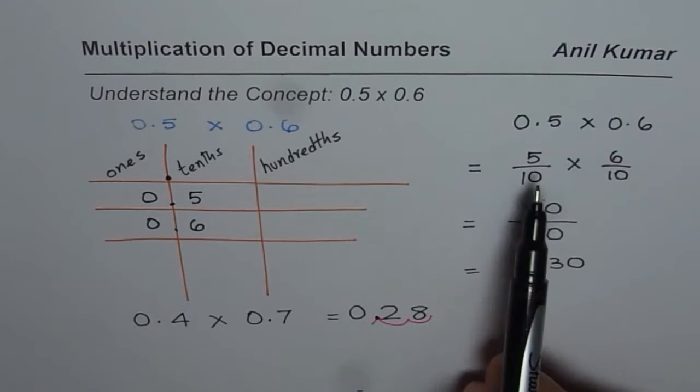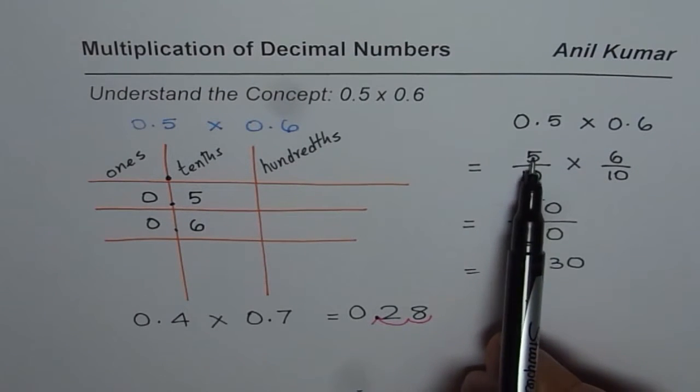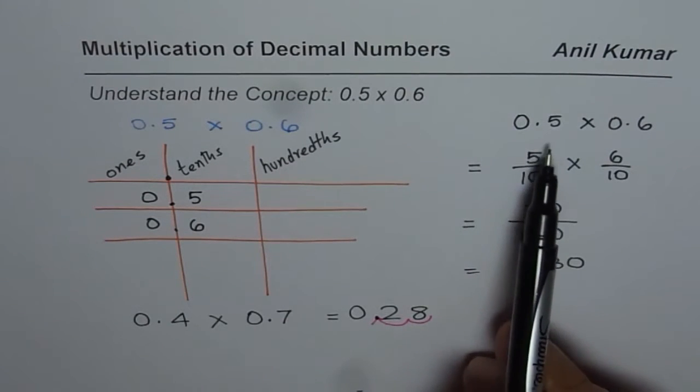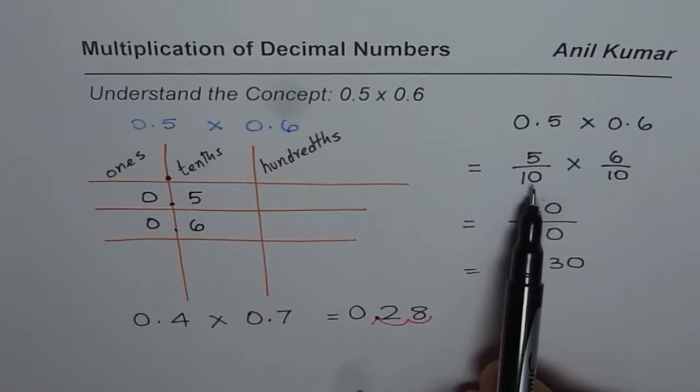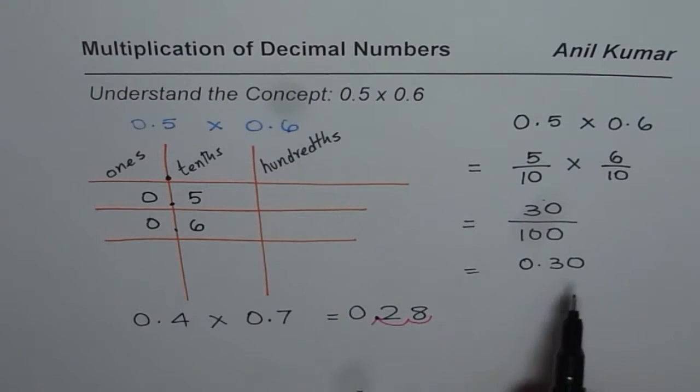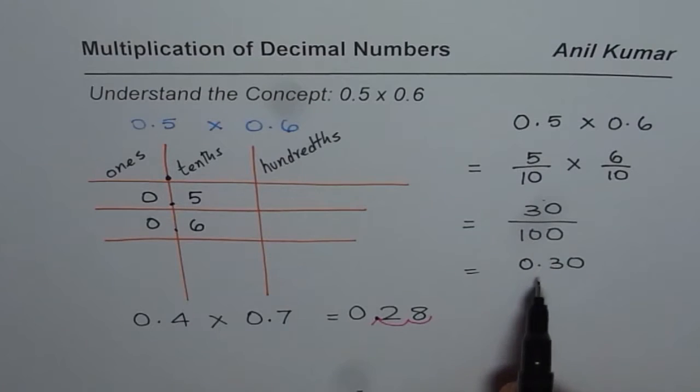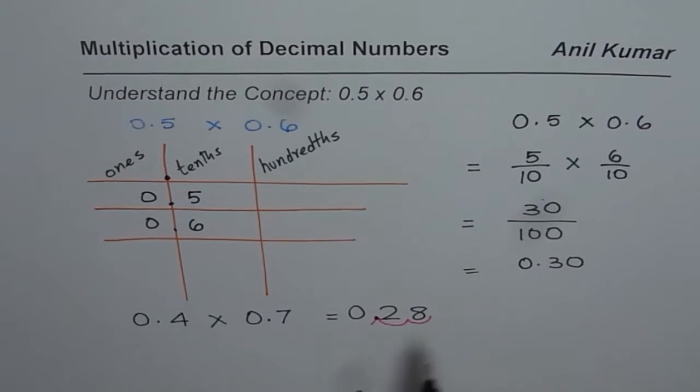So just multiply the numbers as we did here. 0.5 times 0.6 we multiplied the numbers, 5 times 6 is 30. And then we know because there are tens, 10 times 10 is 100. We have placed 30 over 100 as 0.30, as good as putting decimal in two places. So from here you can correlate the concept.